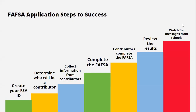Here is a general overview of the FAFSA application process steps. The U.S. Department of Education anticipates completing the FAFSA will take approximately one hour. Step one is creating your FSA ID — this is your login for the FAFSA application and you will have to use your social security number to make this account. Step two is determining who is a contributor. Contributors are people who are required to supply information to a student's FAFSA application, and this can include a parent or a spouse.